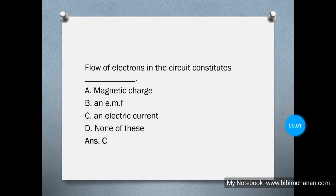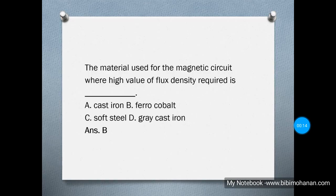The flow of electrons in a circuit constitutes an electric current. For the material used in a magnetic circuit where a high value of flux density is required, the answer is option B: ferro-cobalt.